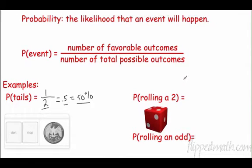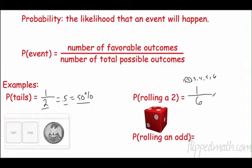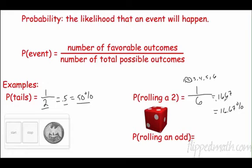What is the probability of rolling a two? The sample space is one through six, so the total number of outcomes is six. Rolling a two happens only once, so it's one out of six. I'm rounding to four decimal places, so that's 0.1667, or 16.67%.